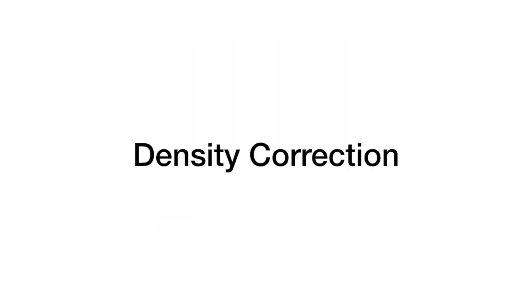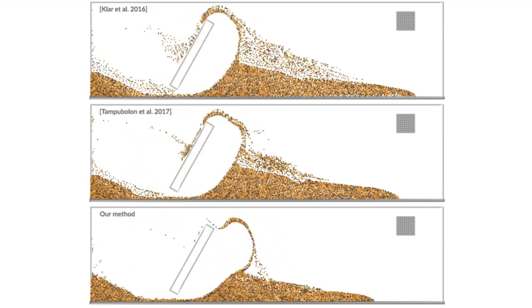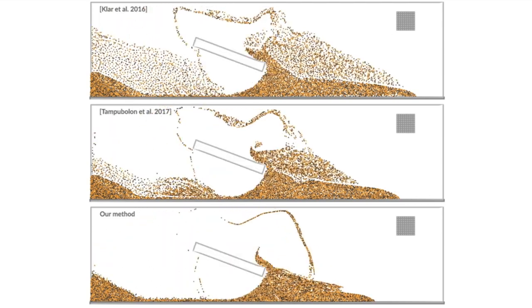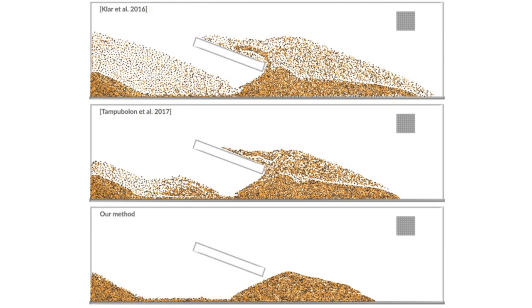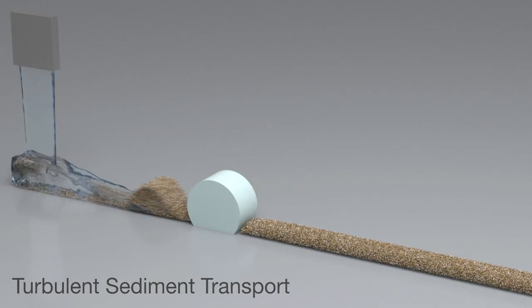Our density evaluation strategy allows granular materials to naturally change their states between discrete debris particles and continuum clumps. This eliminates the grid-dependent volume gain artifact from previous works in MPM. Here we show more examples to demonstrate the efficacy of our method.